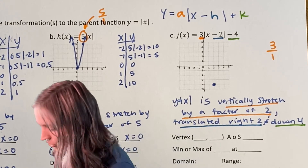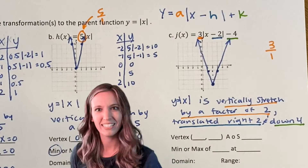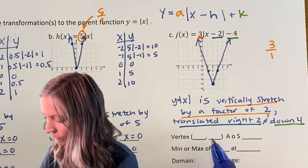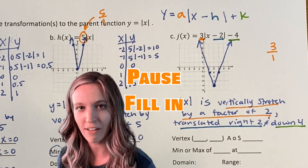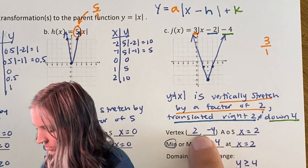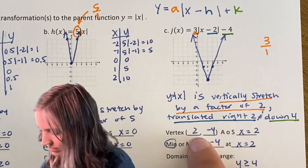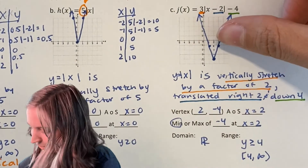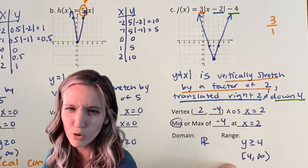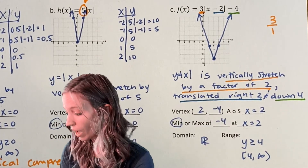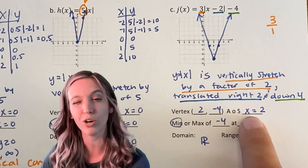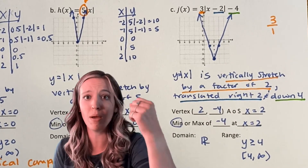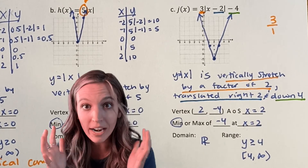Going up three over one from the vertex gives a tall, skinny V shape — confirming the vertical stretch. The vertex is (2, −4); axis of symmetry x = 2; minimum of negative four at x = 2; domain is all real numbers; range is y ≥ −4. We write these facts carefully because we want to correctly identify the vertex, axis of symmetry, and minimum or maximum — always stating the y-value at the x-value.